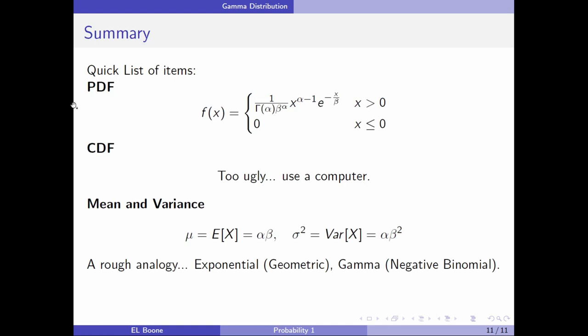Here's the summary. The PDF is f(x) = (1/Γ(α)β^α)x^(α-1)e^(-x/β) for x > 0. The CDF is too ugly - use a computer. Mean and variance: μ = E[X] = αβ, σ² = Var[X] = αβ².